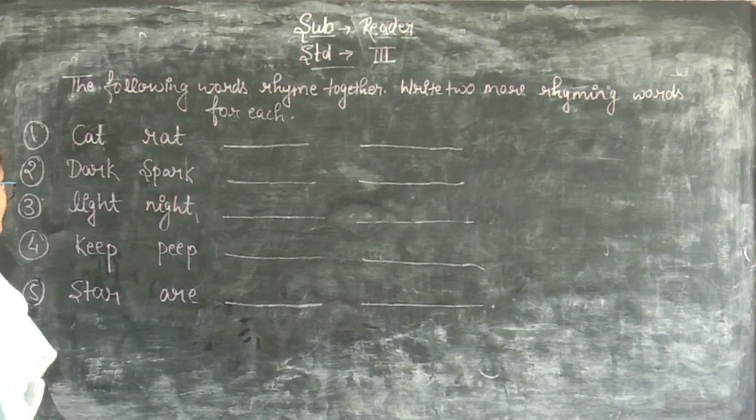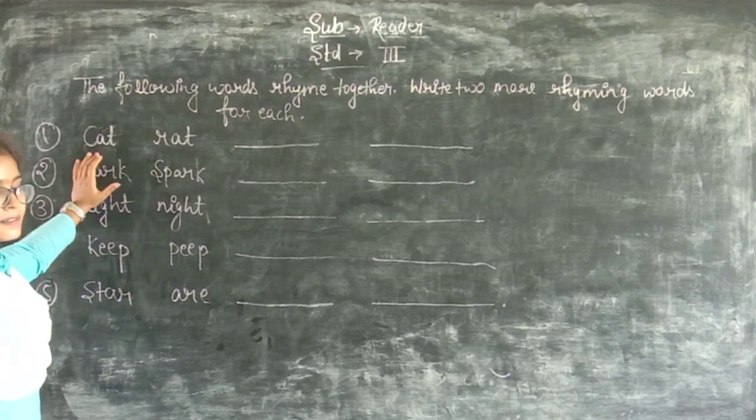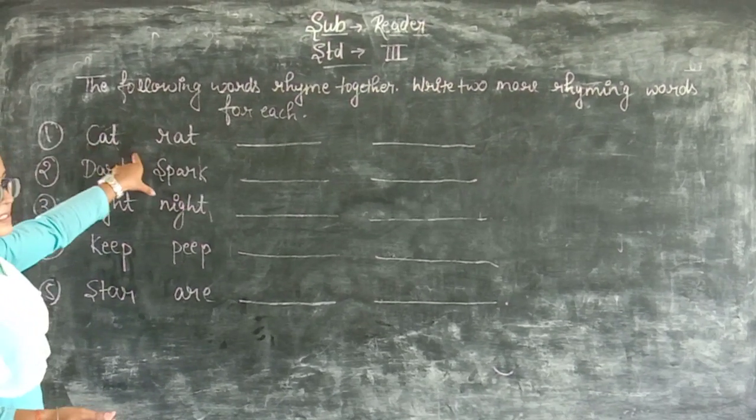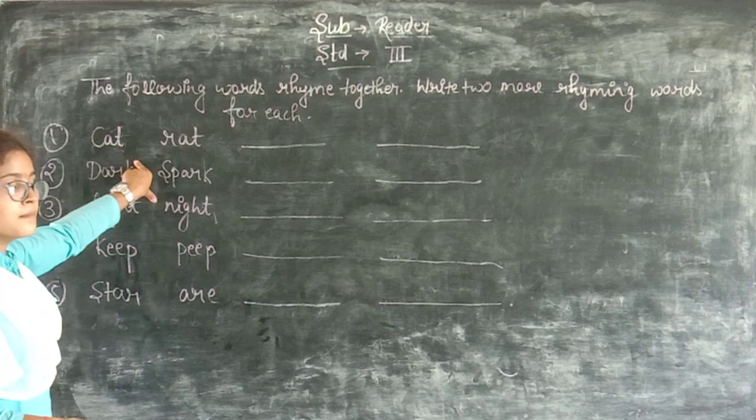So, you will have two words. Basically, cat and rat. Both words rhyme. They have the same sound.